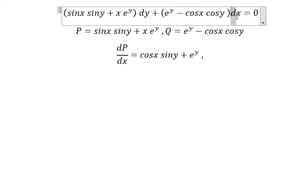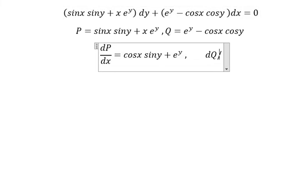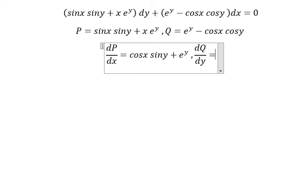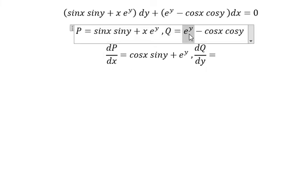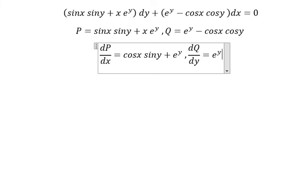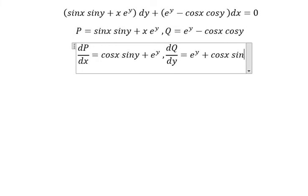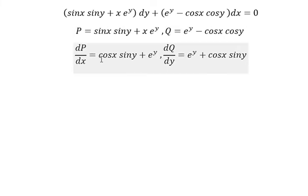Next, we compute dQ/dy. We need the first derivative of Q with respect to y. We have e^y minus cosx cosy. First derivative of e^y is e^y. First derivative of cosy is negative siny. Negative with negative gives positive, so we have e^y plus cosx siny, which is exact.